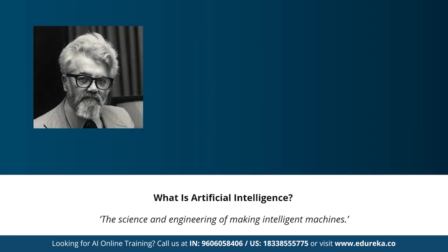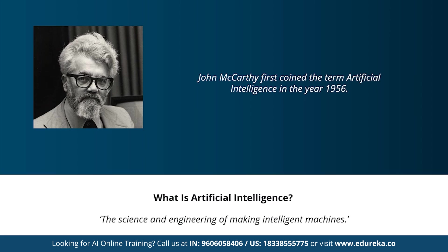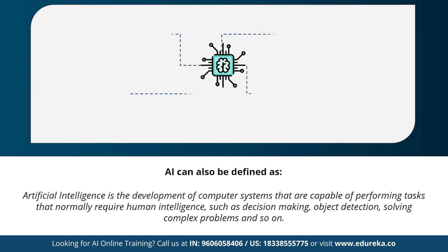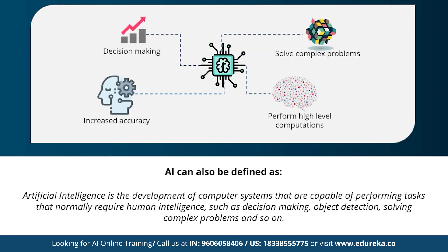The term artificial intelligence was first coined by John McCarthy, who defined AI as the science and engineering of making intelligent machines. In other words, artificial intelligence can be defined as the development of computer systems capable of performing tasks that require human intelligence, such as decision making, object detection, and solving complex problems. AI helps in decision making, solving complex problems, performing high-level computations, and increasing the accuracy of predictions.